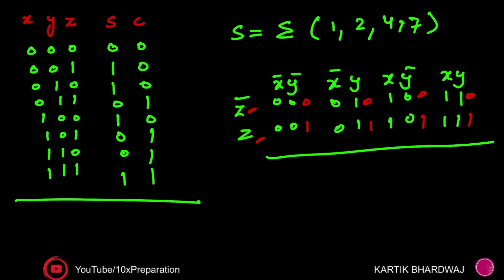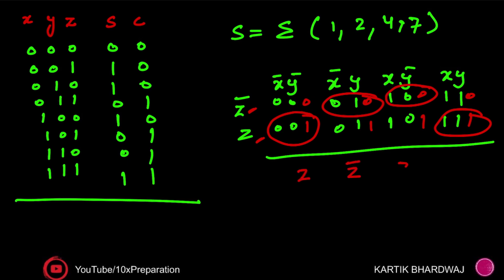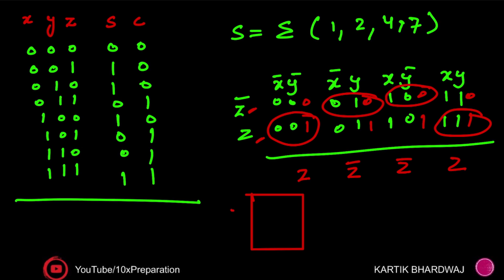Going through all combinations of X and Y (00, 01, 10, 11) and the corresponding Z values, we select minterms one, two, four, and seven. This gives us inputs of Z, Z-bar, Z-bar, and Z for the four MUX inputs respectively. The resulting 4x1 MUX has X and Y as select lines, inputs Z, Z-bar, Z-bar, Z, and the output is the Sum of the full adder.